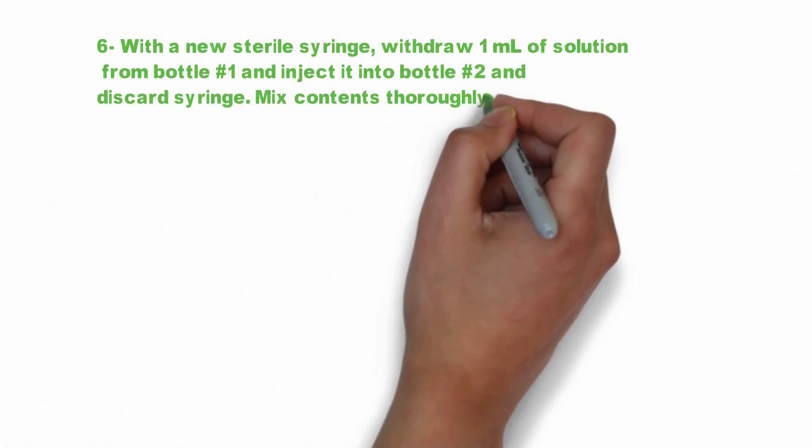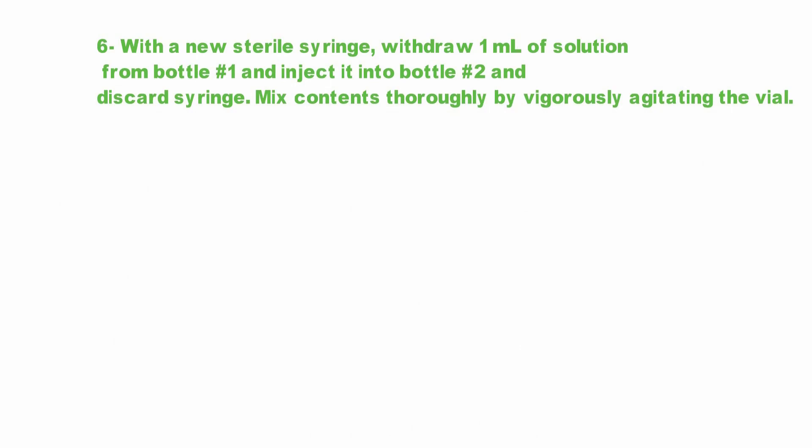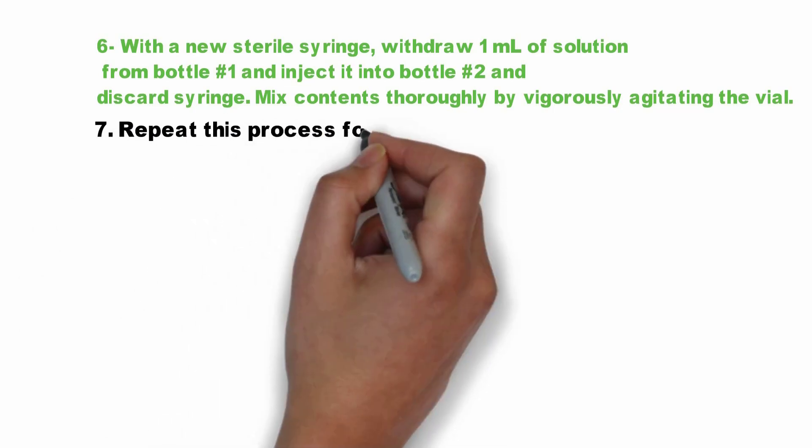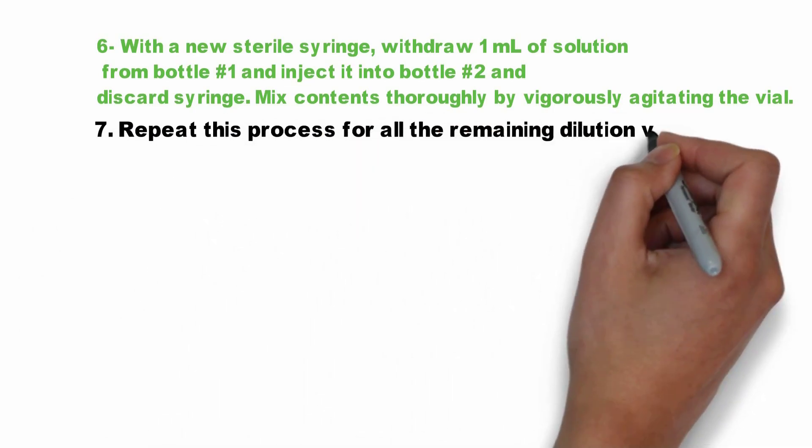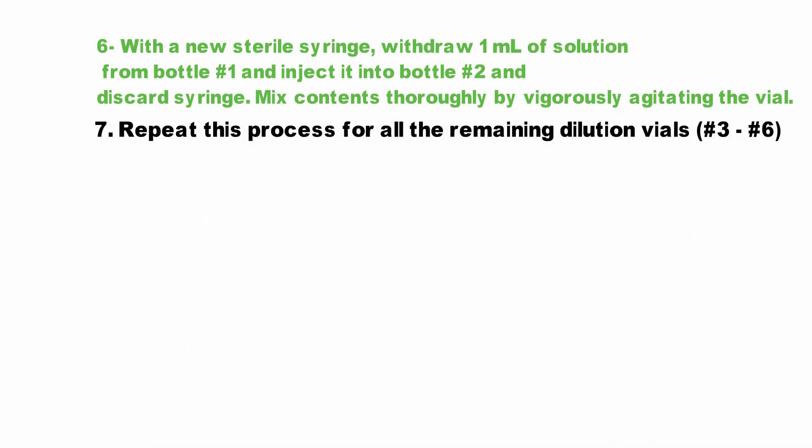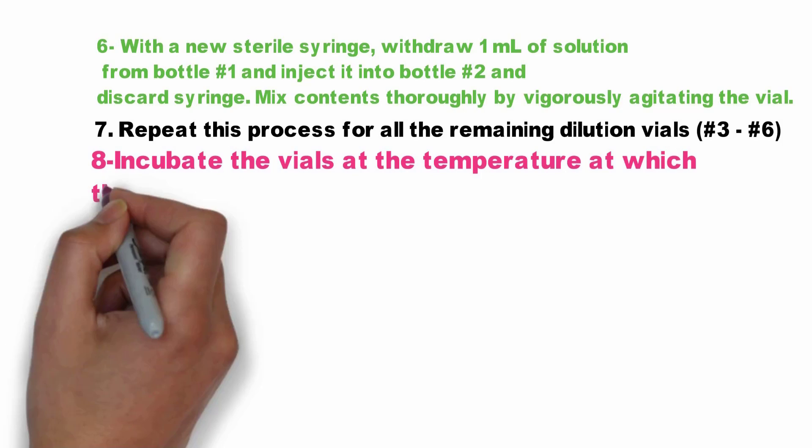With a new sterile syringe, withdraw 1 ml of the solution from bottle number one and inject it into bottle number two, then discard the syringe. Mix the contents thoroughly by vigorously shaking the vial. Repeat this process for all the remaining dilution vials.